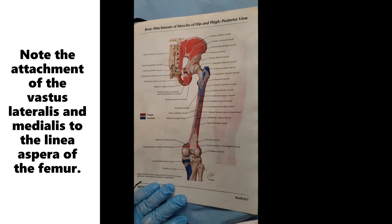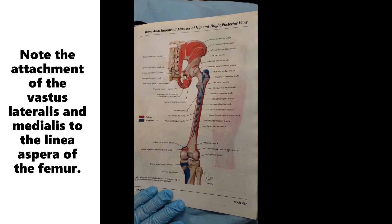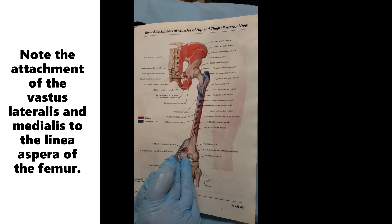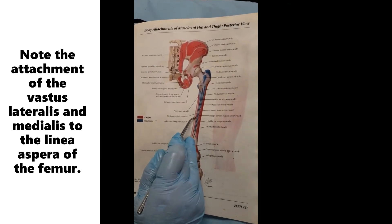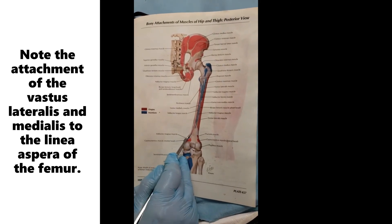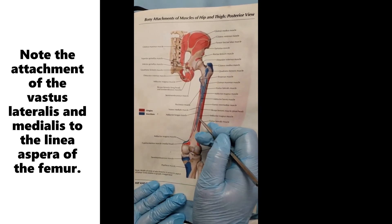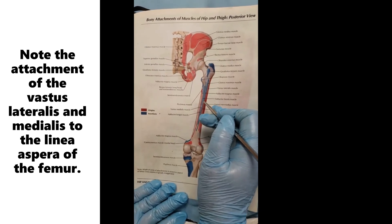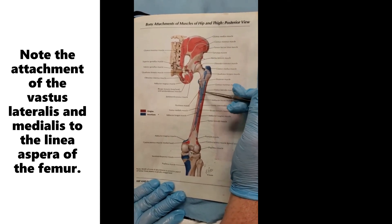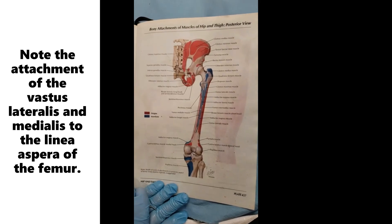The last point is the attachments of the vastus lateralis and vastus medialis on the linea aspera, even though they're anterior compartment muscles. The most medial attachment on the linea aspera belongs to the vastus medialis. The vastus lateralis attachment runs all the way up to the greater trochanter, making it the most laterally attached on the linea aspera. And that ends our video on the medial thigh.